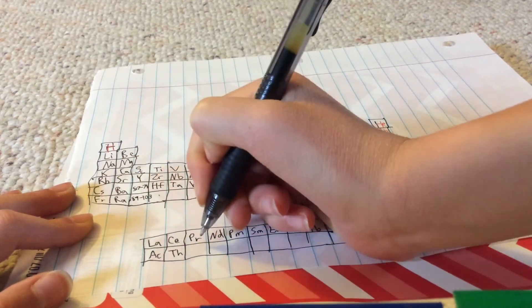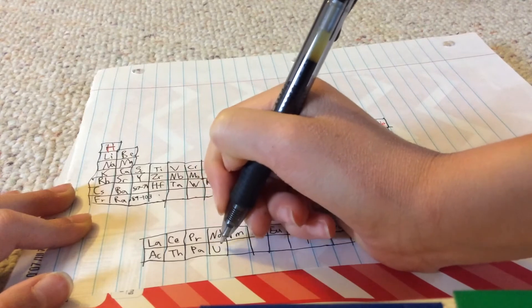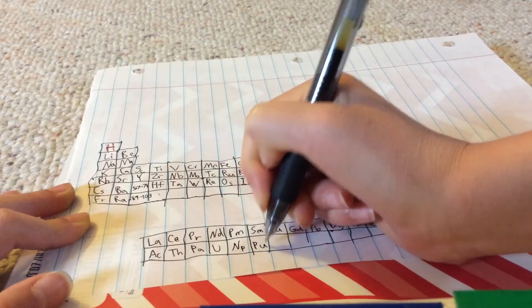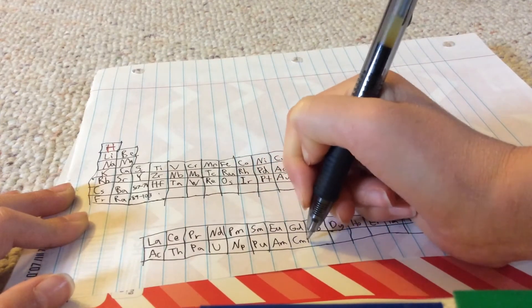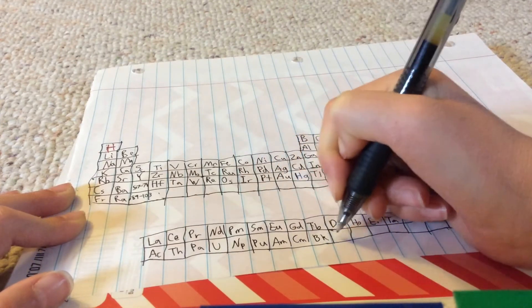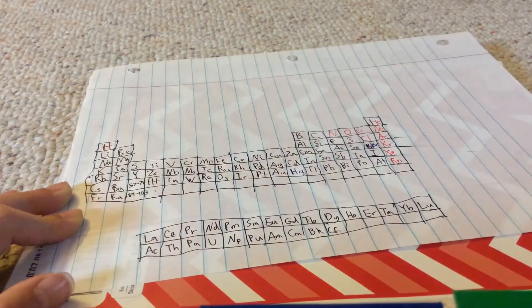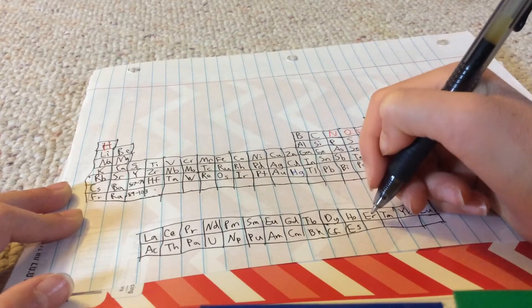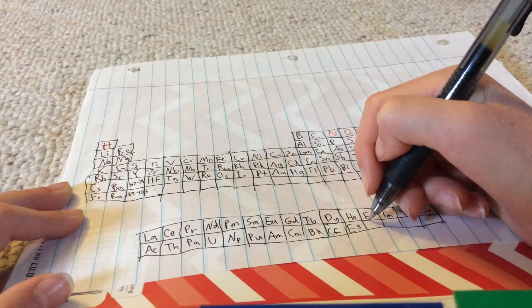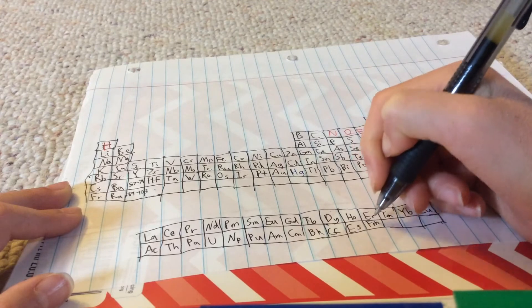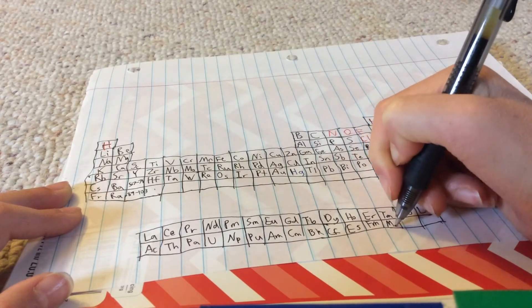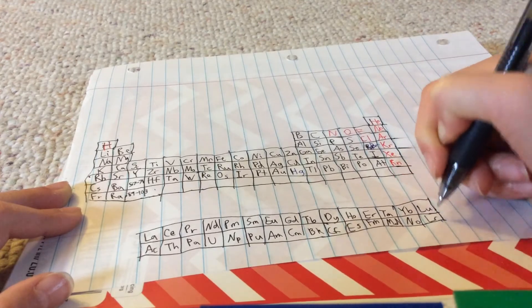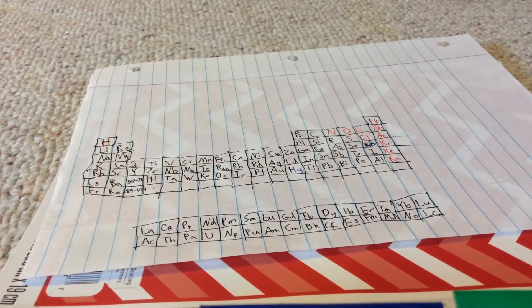Actinium, thorium, protactinium, uranium, neptunium, plutonium, americium, curium, berkelium, californium, einsteinium, fermium, mendelevium, nobelium, laurencium. So yeah, those are all the actinoids.